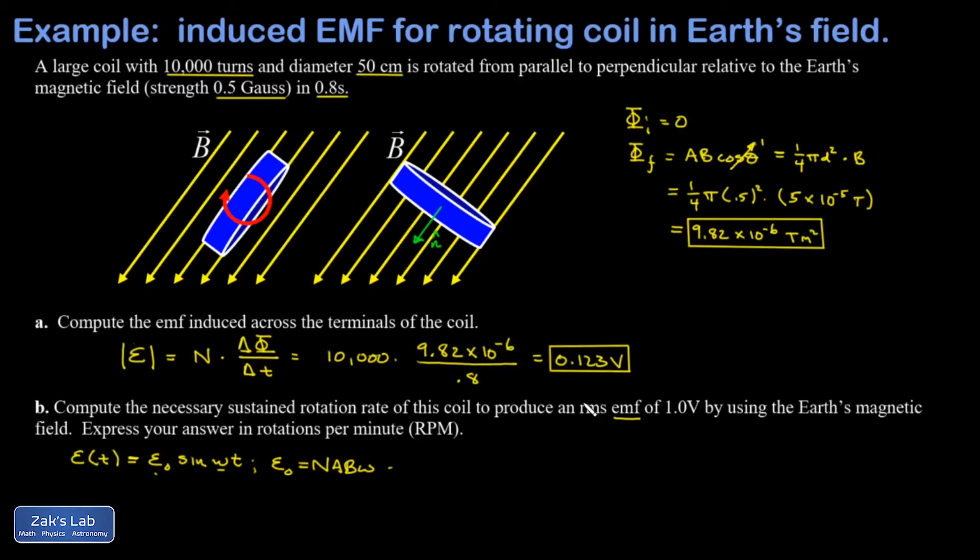In this case we want to get an RMS or root mean squared voltage of one volt, and we have to relate that to the peak voltage. I'll post a link real quick to the video where this was first introduced when we were first looking at AC circuits. The relationship is that the RMS value is 1 over root 2 times the peak value. Since we're looking at an RMS value of one volt in this case, it means our peak value is root 2 times one volt, or root 2 volts.